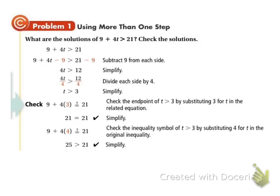If we have the equation 9 plus 4t is greater than 21, I want to get t alone, so I need to get rid of that 9 and I need to get rid of that 4. The first thing I need to do is get rid of the 9, so I'll subtract 9 from both sides and I get 4t is greater than 12.